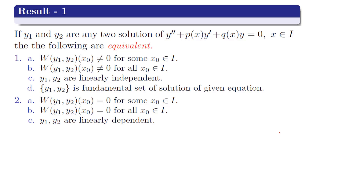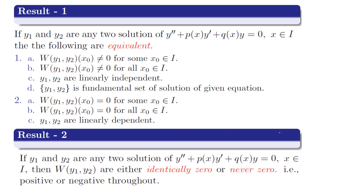Point 2, point a: Wronskian W(y1, y2) at x0 equal to 0 for some x0 in I; Wronskian W(y1, y2) at x0 equal to 0 for all x0 in I; and y1, y2 are linearly dependent. Result number 2: if y1 and y2 are any two solutions of y'' + P(x)y' + Q(x)y = 0 where x belongs to interval I, then the Wronskian of y1, y2 is either identically 0 or never 0 — that is, positive or negative throughout the interval.